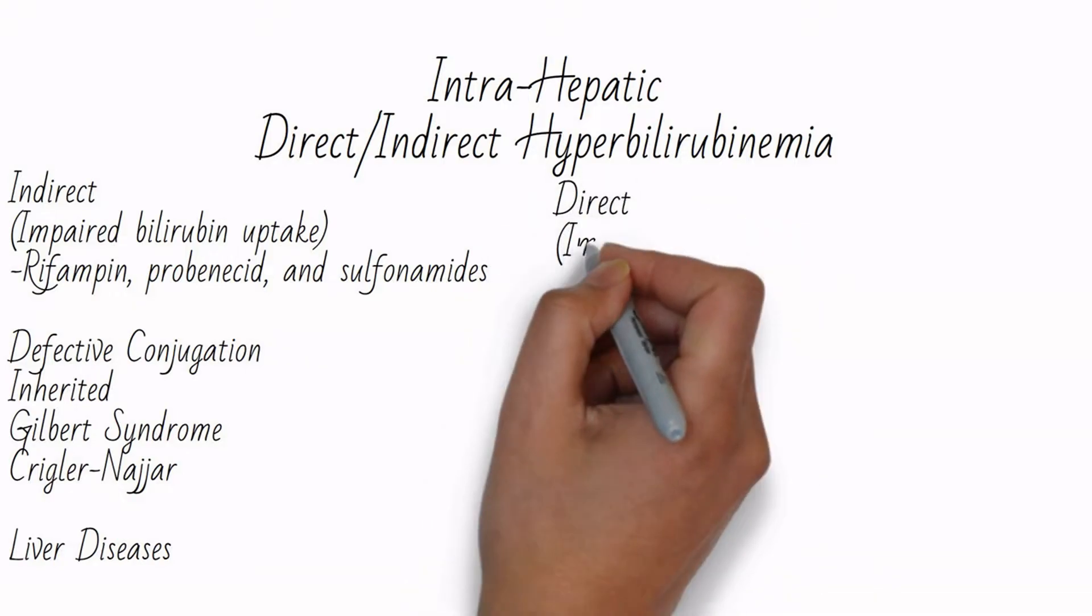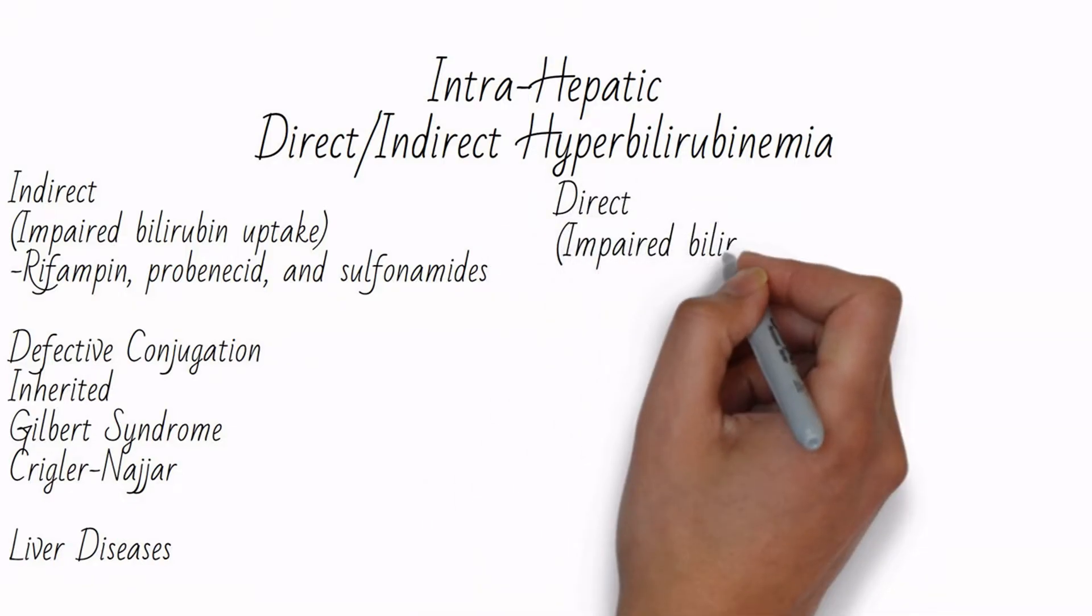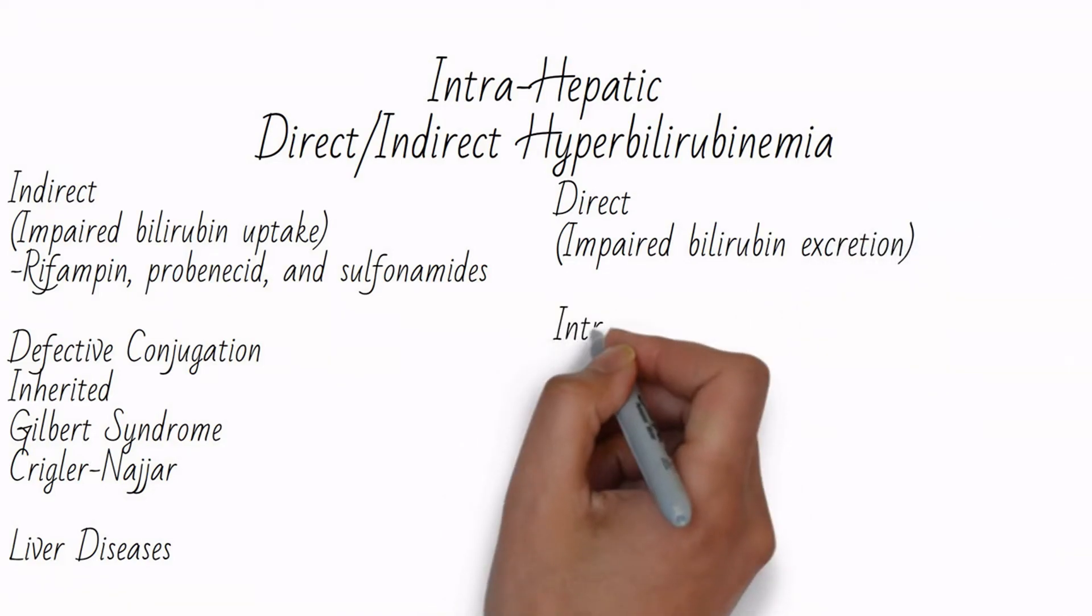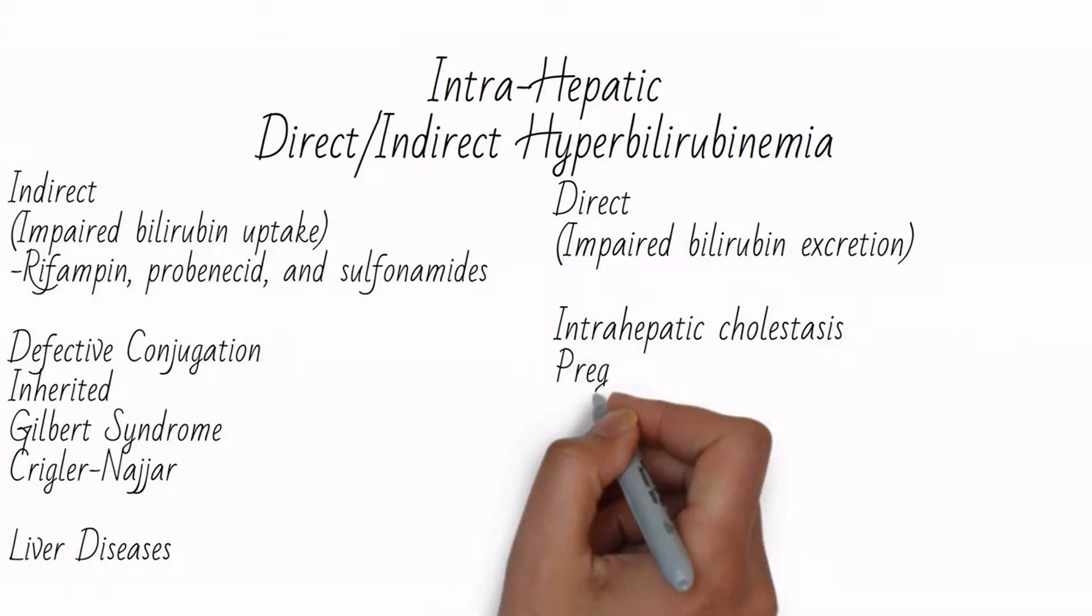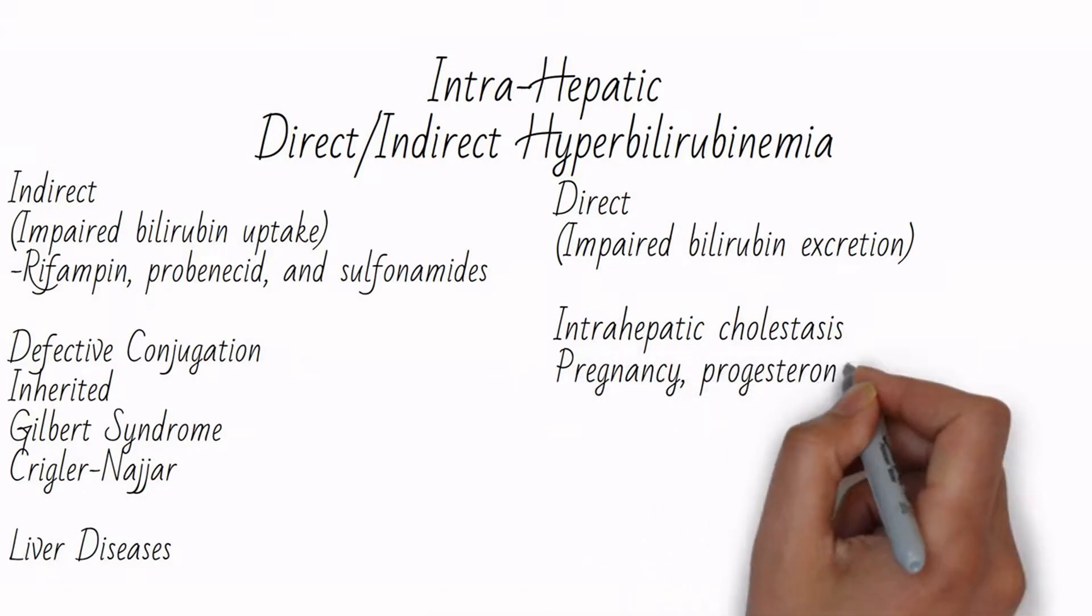Direct intrahepatic hyperbilirubinemia may be due to diseases that allow bilirubin to be conjugated but not excreted, such as intrahepatic cholestasis secondary to cholestasis of pregnancy caused by high progesterone levels.